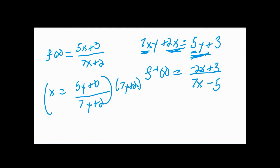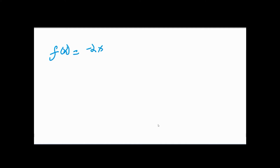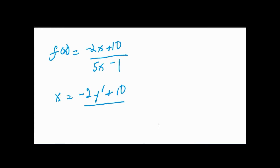Now I'll make it look more like calculus by using y' (y prime) instead of y. Let's say f(x) = (-2x + 10) / (5x - 1). Following the process, x = (-2y' + 10) / (5y' - 1), and multiplying both sides by (5y' - 1) gives: 5xy' - x = -2y' + 10.